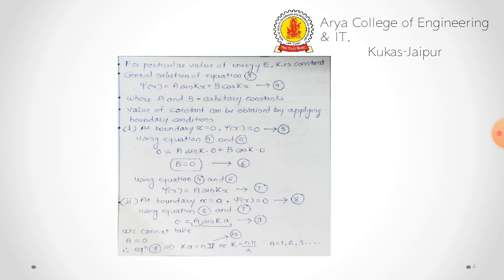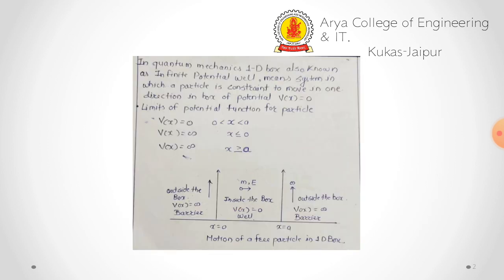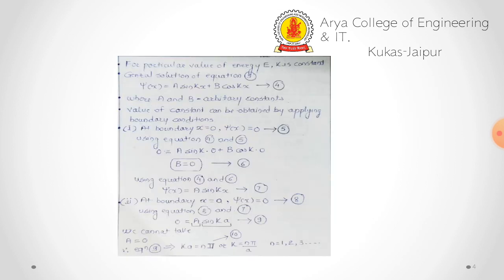To find the arbitrary constants, we apply boundary conditions. At x = 0 and x = a, these are the boundaries. The wave function associated with the particle exists only in the well area; outside the well area, ψ(x) does not exist. So for the barrier area, the value of ψ(x) is 0.